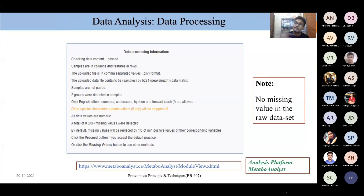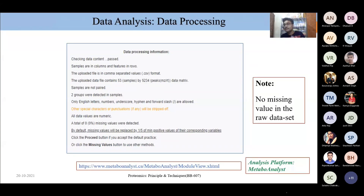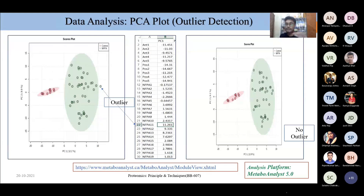For data processing, when I fed the raw data for NFPA and control, two groups were detected as expected. Missing value imputation showed zero percent missing values — I had already confirmed this from the CSV file itself. Still, as a normal approach when feeding data into MetaPro, it confirmed zero percent missing values. I then proceeded to PCA, where I identified a kind of outlier in the cluster. From the PCA, I could easily identify the outlier based on the PC1 percentage.